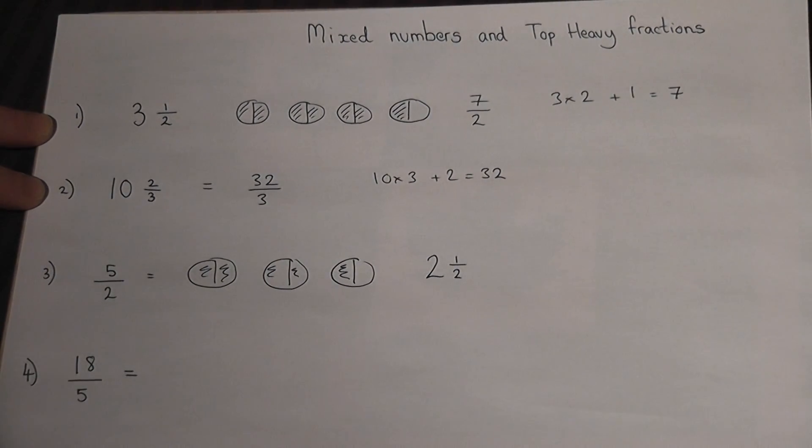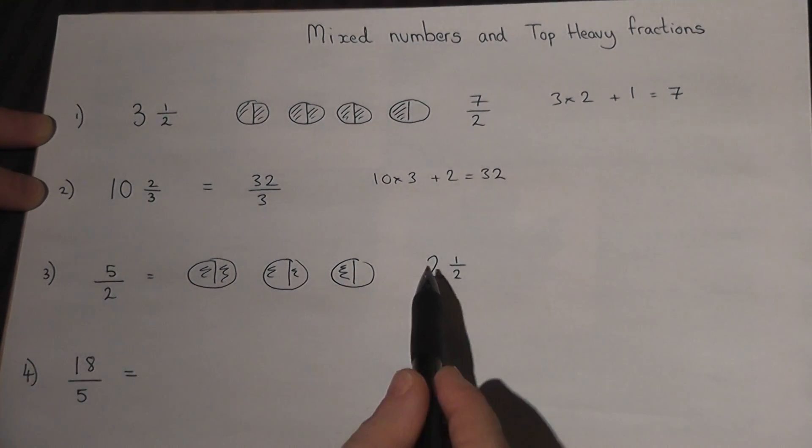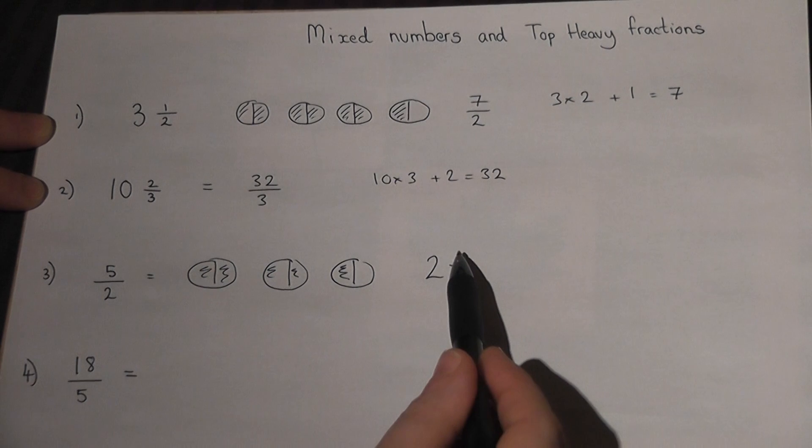But there's a way of doing this without drawing diagrams. Observe that if we ask ourselves how many twos are there in five - well, there are two twos in five, remainder one.